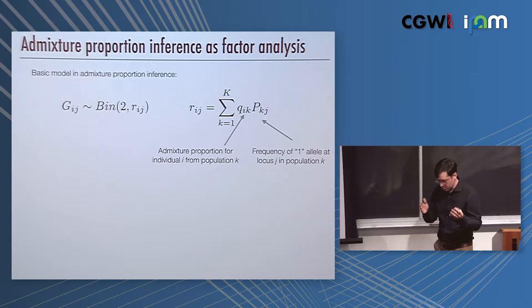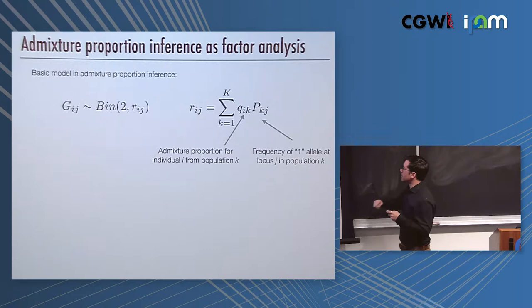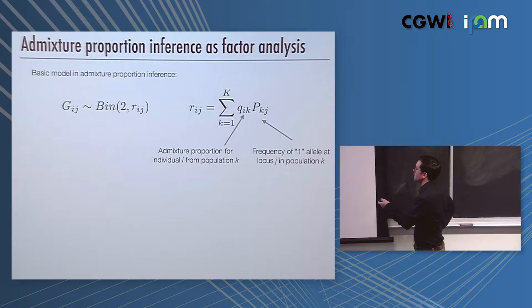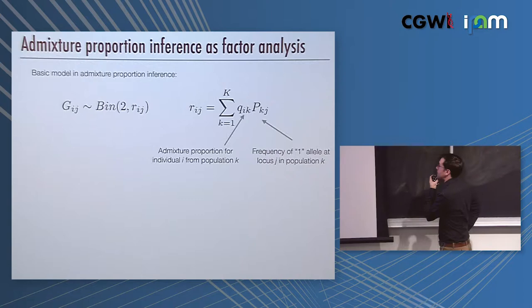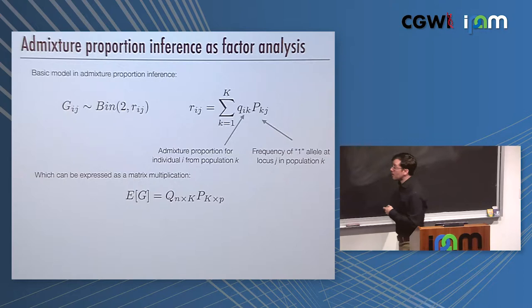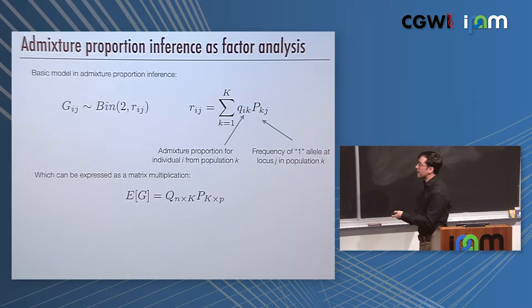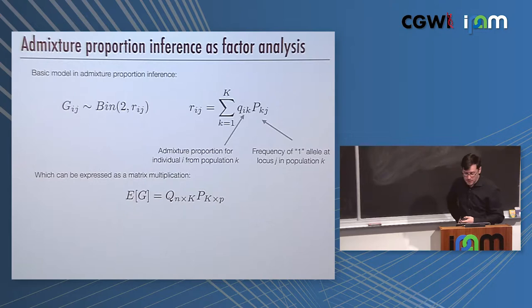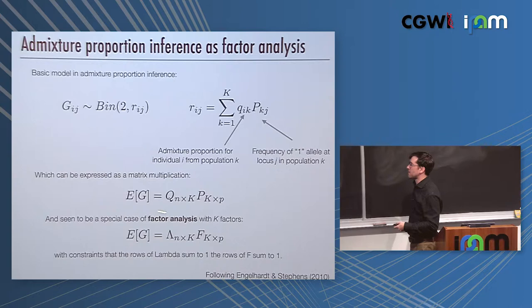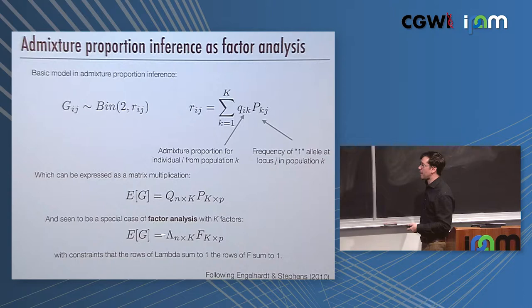An interesting thing is you can think of this as factor analysis. In the actual Admixture model, the original Structure model, there's a latent variable for the ancestry of each allele copy. You can sum over that latent variable, and the model becomes GIJ is binomial size two, samples from an underlying success probability that's RIJ, where the RIJ is a sum over the admixture proportion of the i-th individual in the k-th population and the frequency in the k-th population of the j-th allele. This can be expressed as a matrix multiplication, where you have a Q matrix that's N by K of admixture proportions and a P matrix that's K by P, a collection of all the allele frequencies.